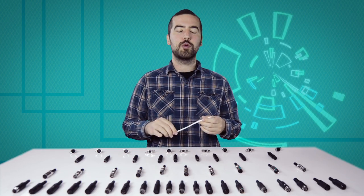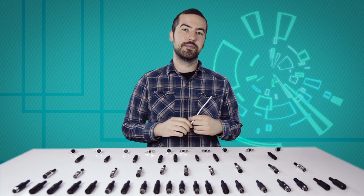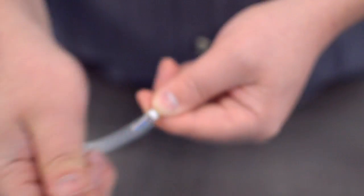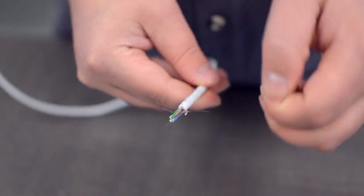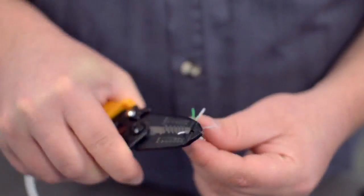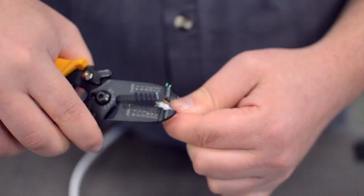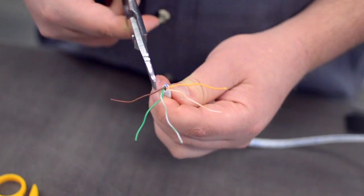For this example, we will be using CAT 5E cable. You will also need to strip the individual conductors. Trim off any additional conductors if needed.